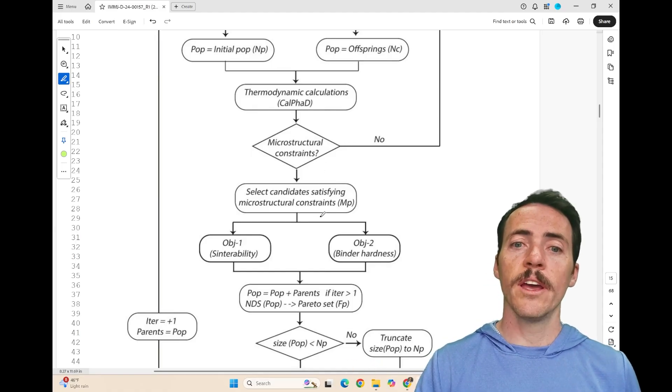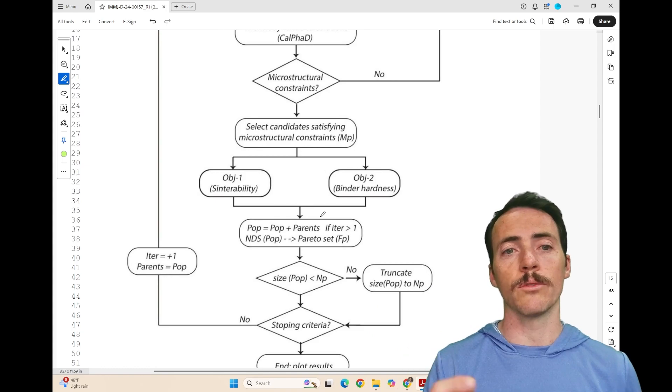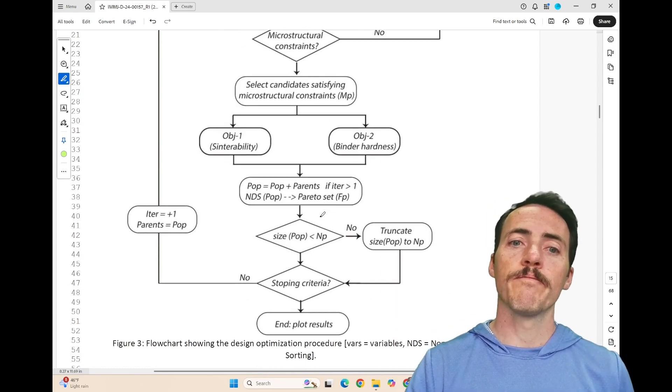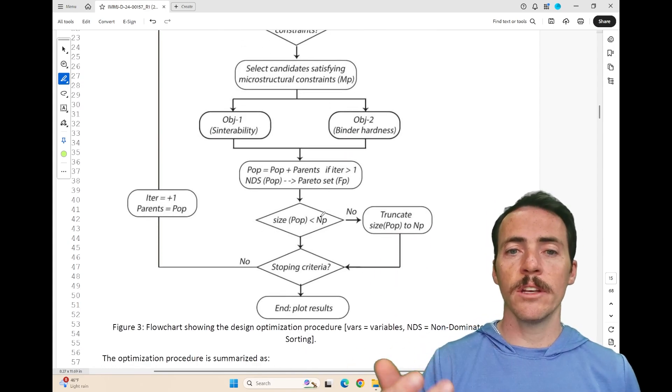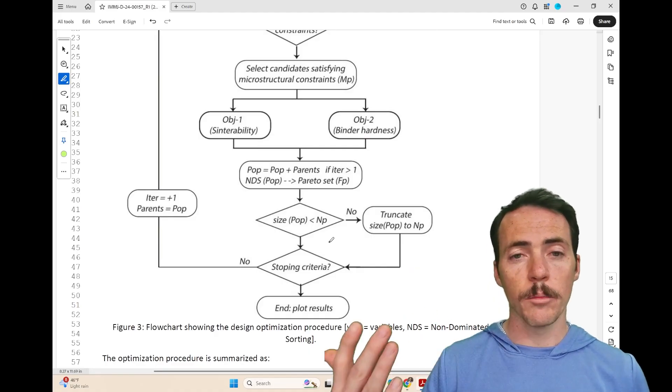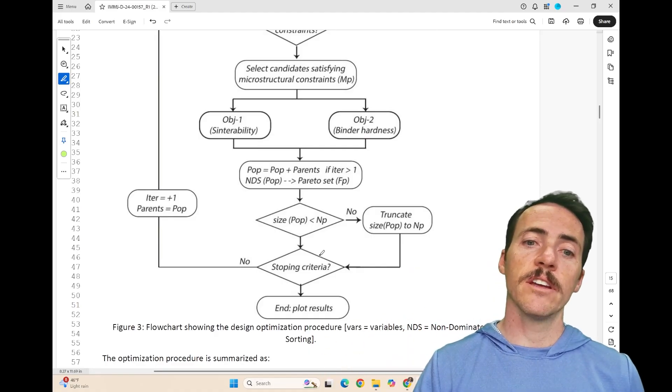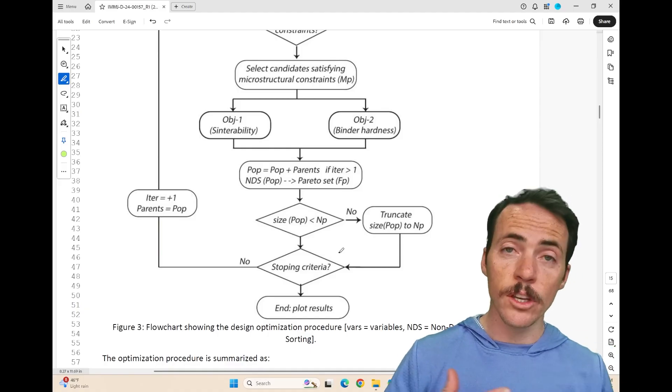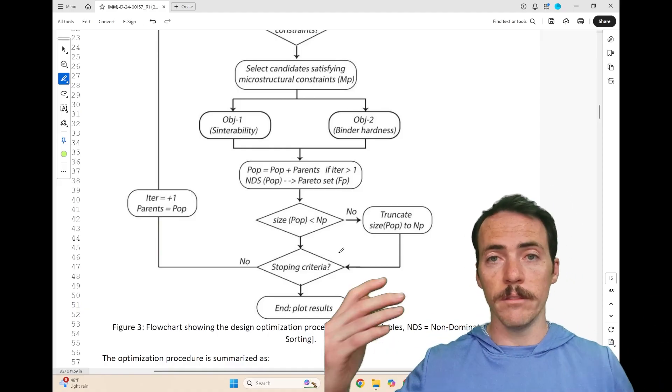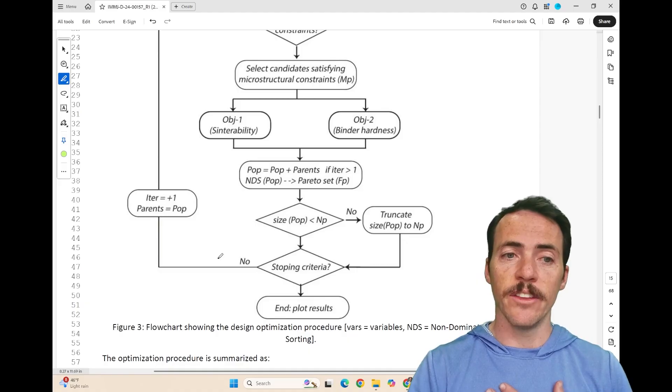If yes, then they continue forward and now they identify their two objectives, the sinterability and the binder hardness. Then they take this population and if it's less than their desired number of populations for this population to go forward, they then ask, does this meet our stopping criteria? Is it good enough to be a new binder, essentially? If yes, then they're done. If it's not done, then you go back and you add another iteration.